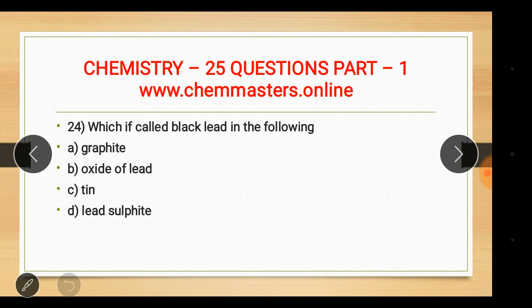Question twenty-four: which of the following is called black lead? The answer is graphite. The other options were oxide of lead, tin, and lead sulfide.